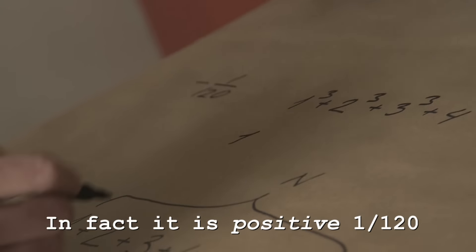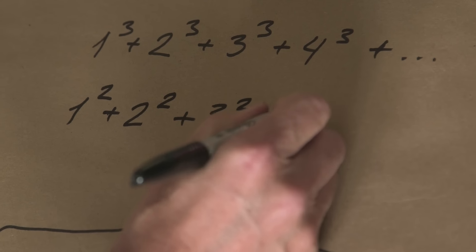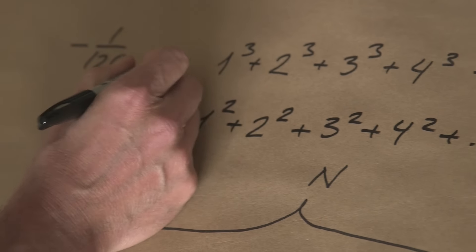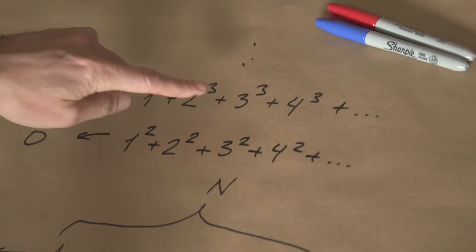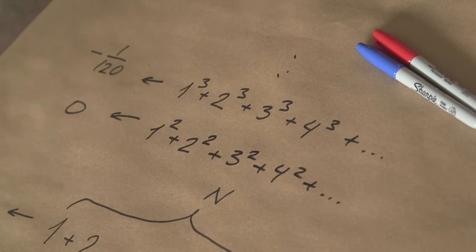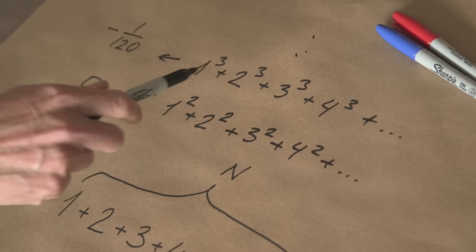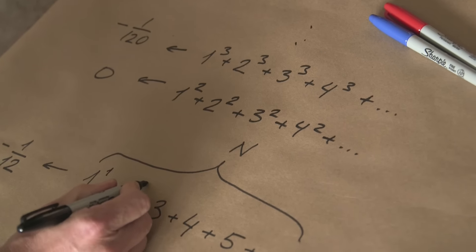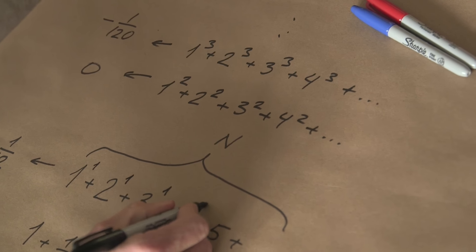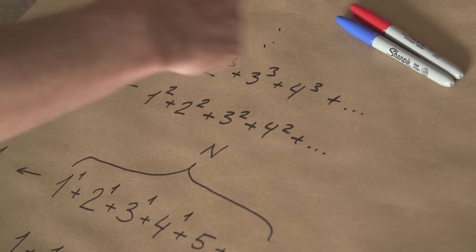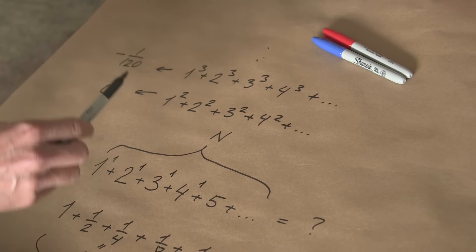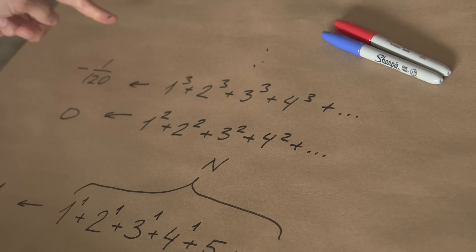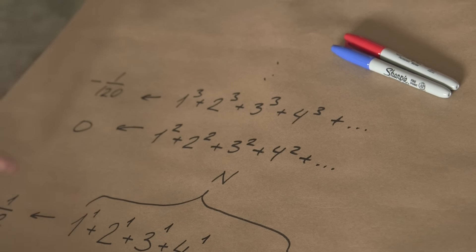But Euler allowed himself to do some manipulation with such series and came up with a different answer, which I think was 1 over 120. He also, you might ask, why did I skip squares? Actually, you can do that as well. But the answer is even more surprising. You actually get zero within that scheme. And so on. So he was actually studying all possible integer powers. Powers by natural numbers. These are the squares, the cubes, and you can do the fourth power, and so on. And so the funny thing happens that for all even values, you actually get zeros, and for odd values, you get some rational numbers.